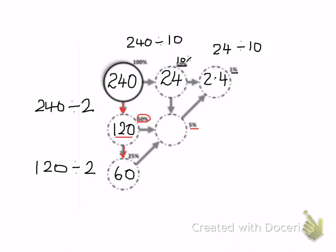And we want to get 5%. 50% divided by 10 is going to be 5%. So we can do that calculation. We can do 120 divided by 10, which gives us 12.